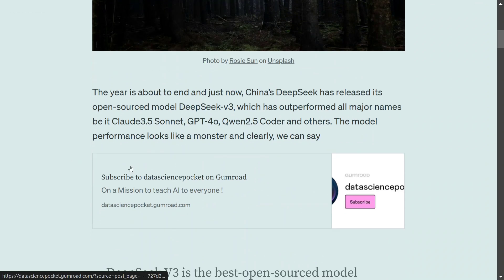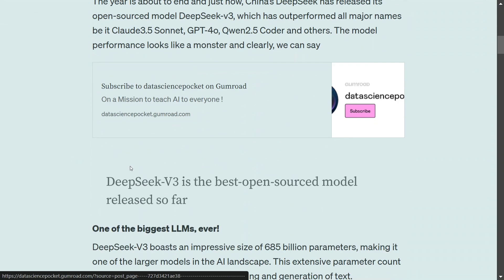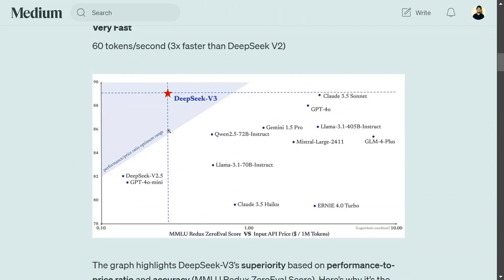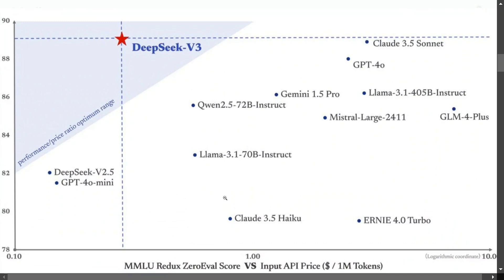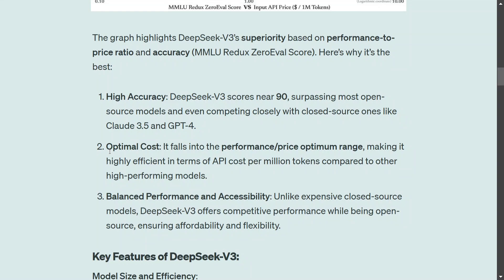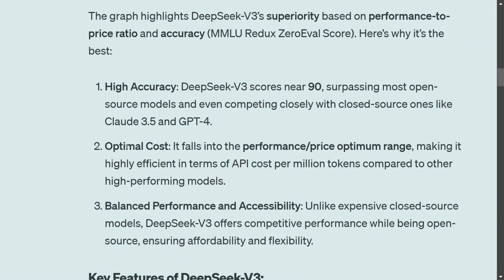It's not just Qwen but also DeepSeek, which is also in the generative AI race. As you can see, it is very fast. This is another plot shared by the team comparing the MMLU Redux zero-eval score versus input API price. In that case also, DeepSeek V3 on the top is the best performing LLM. Given the input API price, the results it achieves are still the best and very close to Claude 3.5 Sonnet, but the cost of that API is much higher. On the cost part also, they have had a huge win.